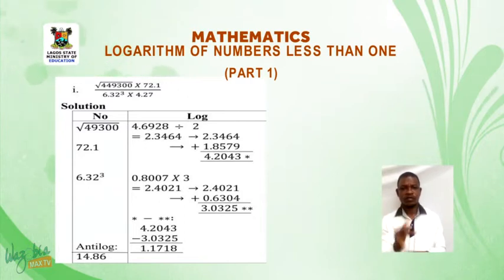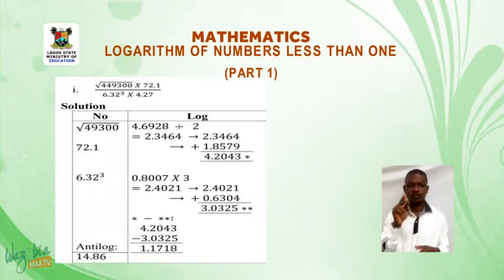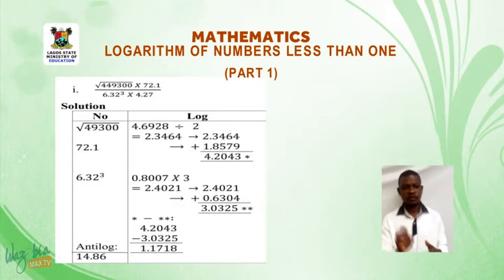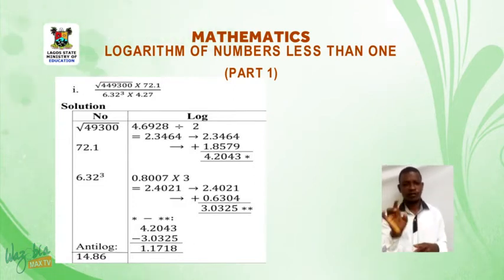We have to add 1 to whatever we get there, so that gives us 2 places before the decimal points, making it 14.86.